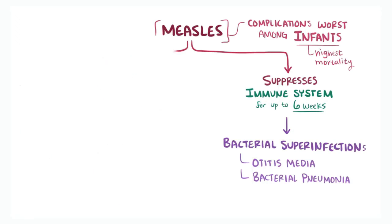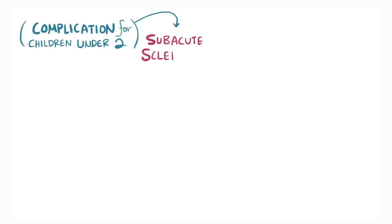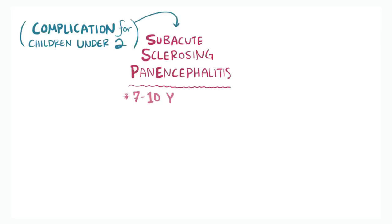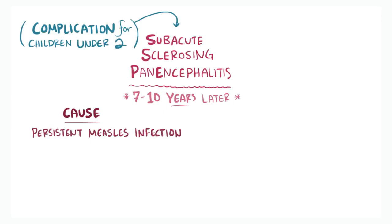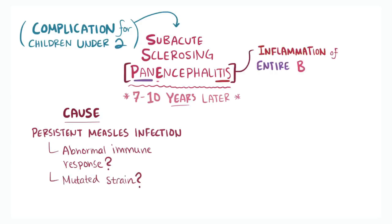Another severe and often fatal complication for children under two years old is the development of subacute sclerosing panencephalitis, or SSPE, which can happen seven to ten years later. This is thought to be caused by persistent measles virus infection, possibly due to an abnormal immune response or a mutated strain of the measles virus, which leads to chronic inflammation of the entire brain.